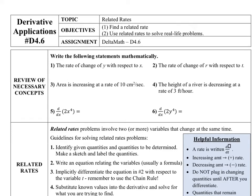Section 4.6 is about a topic called related rates, and they usually come in the form of a word problem. Before we begin, I want to go over some necessary concepts that you need to remember about notation, specifically the Leibniz notation. The first review question asks for the rate of change of y with respect to x. That Leibniz notation is dy over dx, and that's how you express a rate — a rate is just a derivative. The derivative of y with respect to x is that rate of change of y with respect to x.